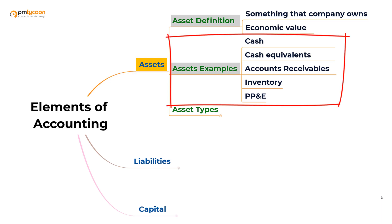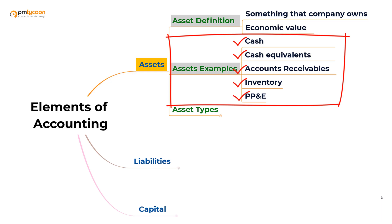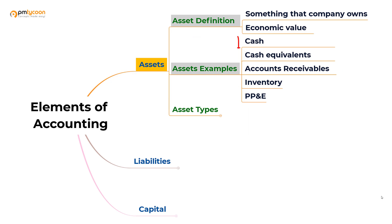Let's look at the examples of assets. We have cash, cash equivalents, accounts receivables, inventory, and property, plant, and equipment. These all things fall under the category of assets. Let's talk about them one by one.